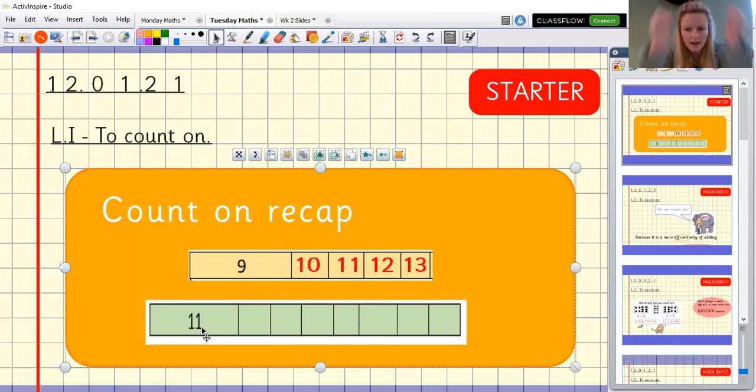Let's have a look here. So we've got 11 in our head. We're going to count on for seven. I think it's one, two, three, four, five, six, seven. So let's do that together.